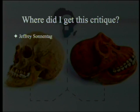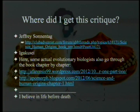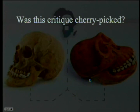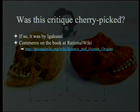I got this critique from a blog that Jeffrey Sonnentag made with ClubAdventist.com, and somebody by the name of Igakse commented and gave a couple of places to look. We've been particularly looking at the Science and Human Origins material. This is actual evolutionary biologists — I didn't pick out that critique myself; if it was cherry-picked, it was cherry-picked by Igakse. The comments on the book at Rational Wiki also recommend this.